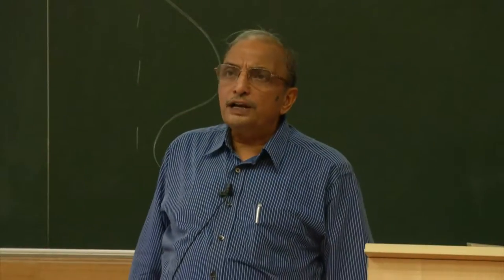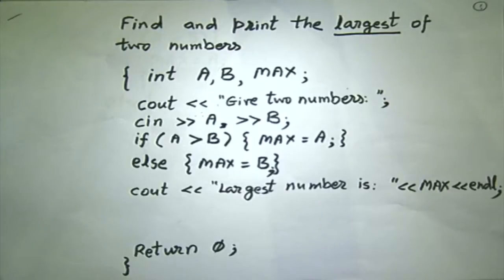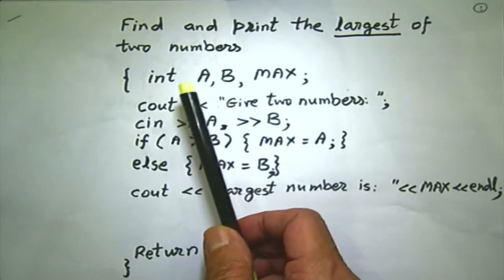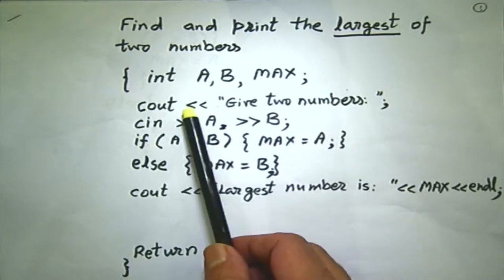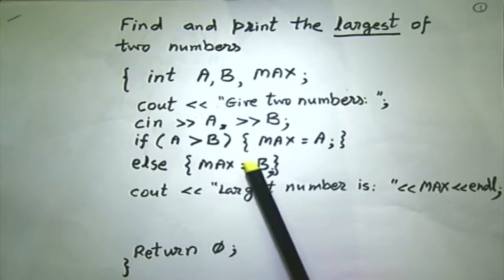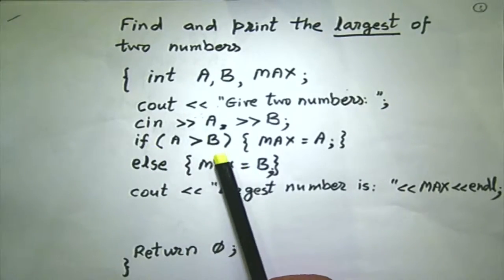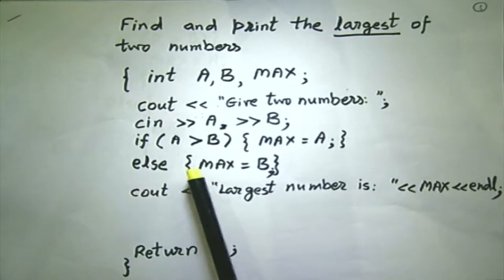You have studied the conditional execution of statements. This is one problem you would have solved: how to find and print the largest of two given numbers. If two numbers are given, this is one program which could solve that problem. The numbers are a and b. I declare int a and b, and I declare max to store the largest value. I have standard output saying give me two numbers. I input two numbers a and b and have a simple conditional: if a is greater than b, I allocate a to max, else I allocate b to max. At the end of this execution, max will contain the larger of the two.